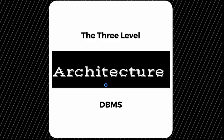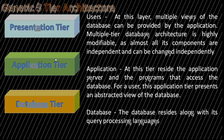A three-tier architecture separates its tiers from each other based on the complexity of the user and how they use the data present in the database. Let us understand all the parts of the generic three-tier architecture.